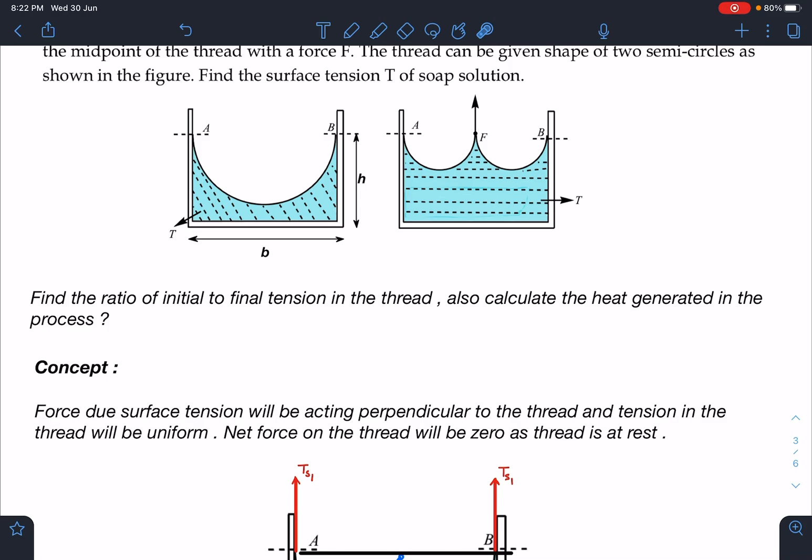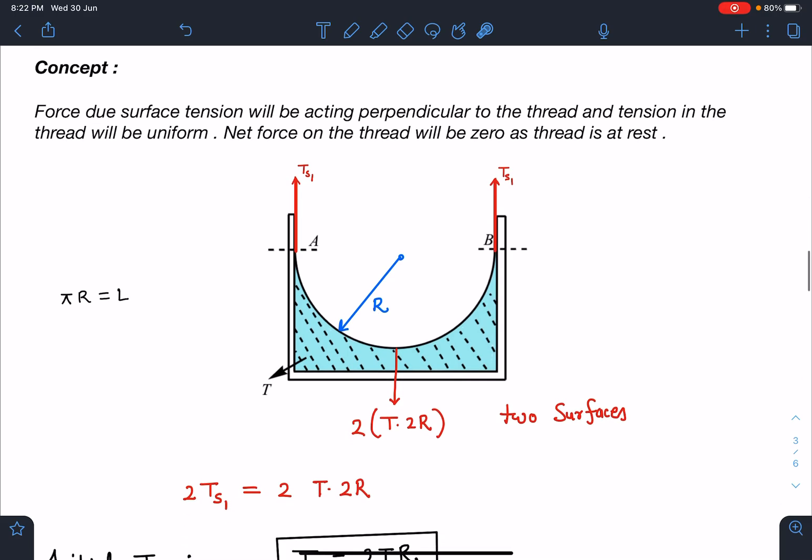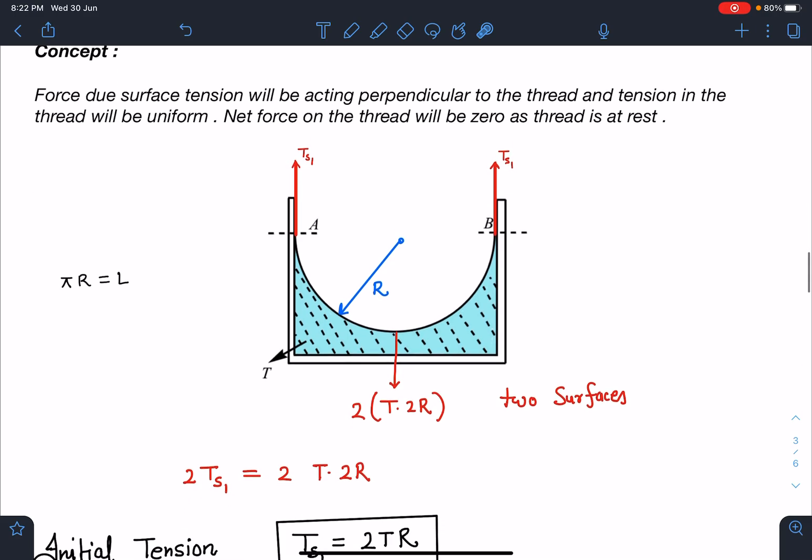So heat generated part is pretty good. So let us discuss this problem. The concept part here. Force due to surface tension will be acting perpendicular to the thread. We already know that and the tension in the thread will be uniform. The net force on the thread will be zero as the thread is at rest. If you take any small part of the thread, you will find the net force is going to be zero. That means surface tension force and tension in the string or tension in the thread will be balancing each other.